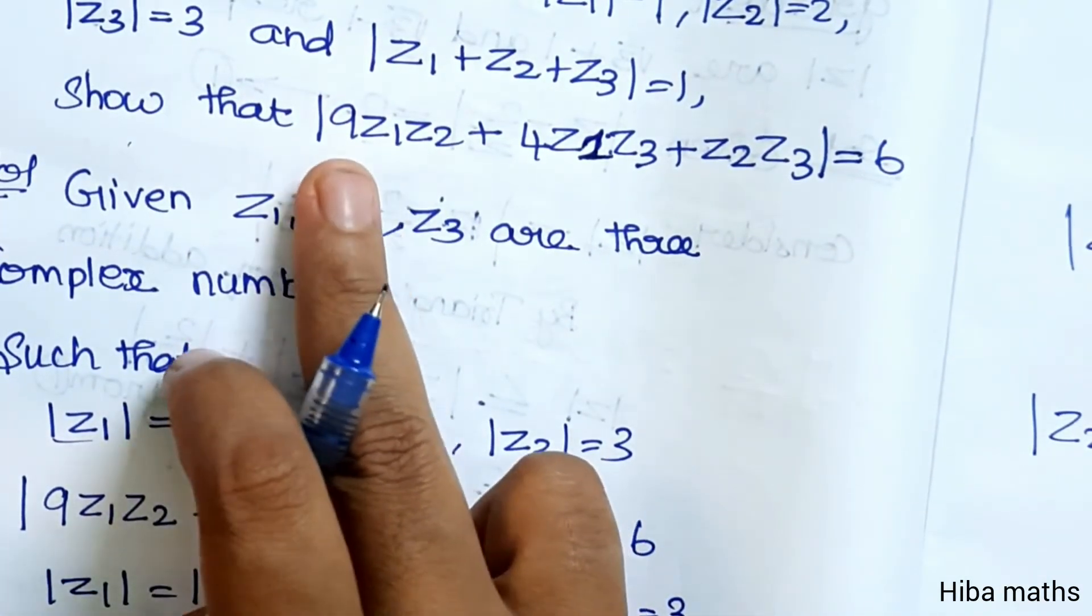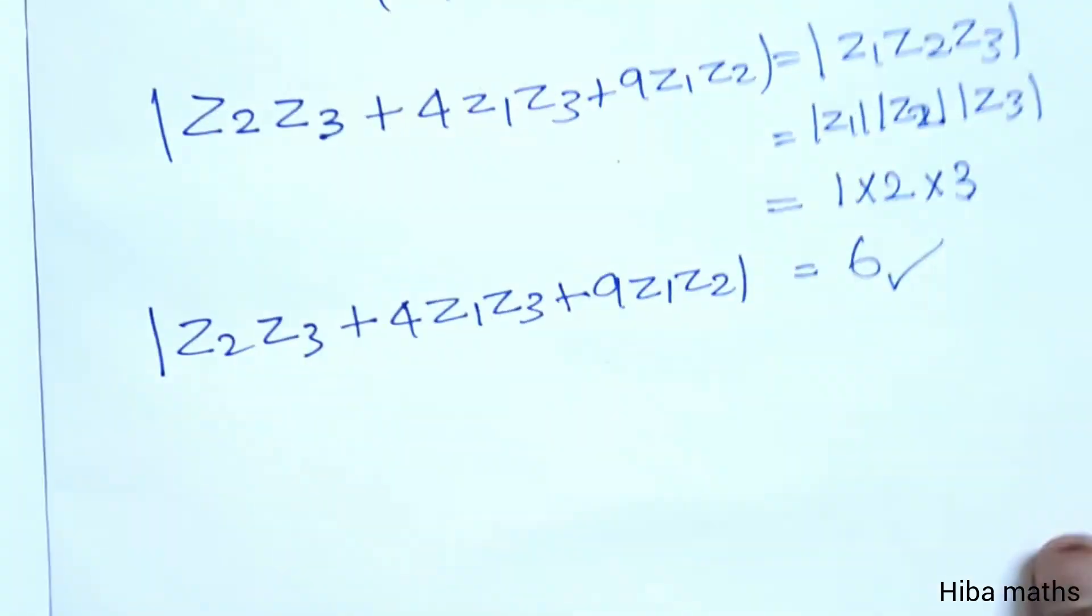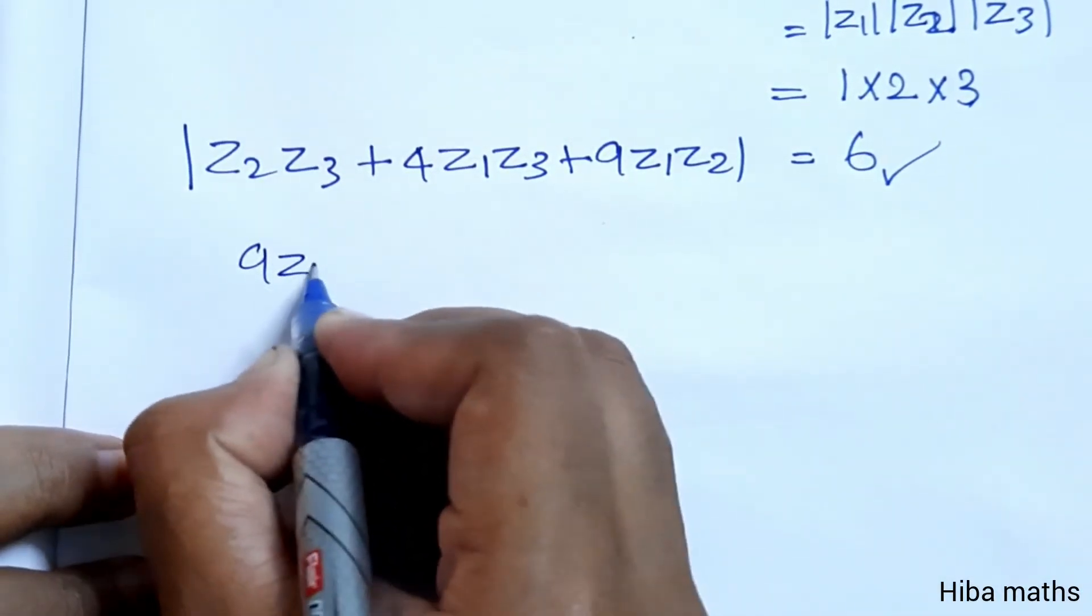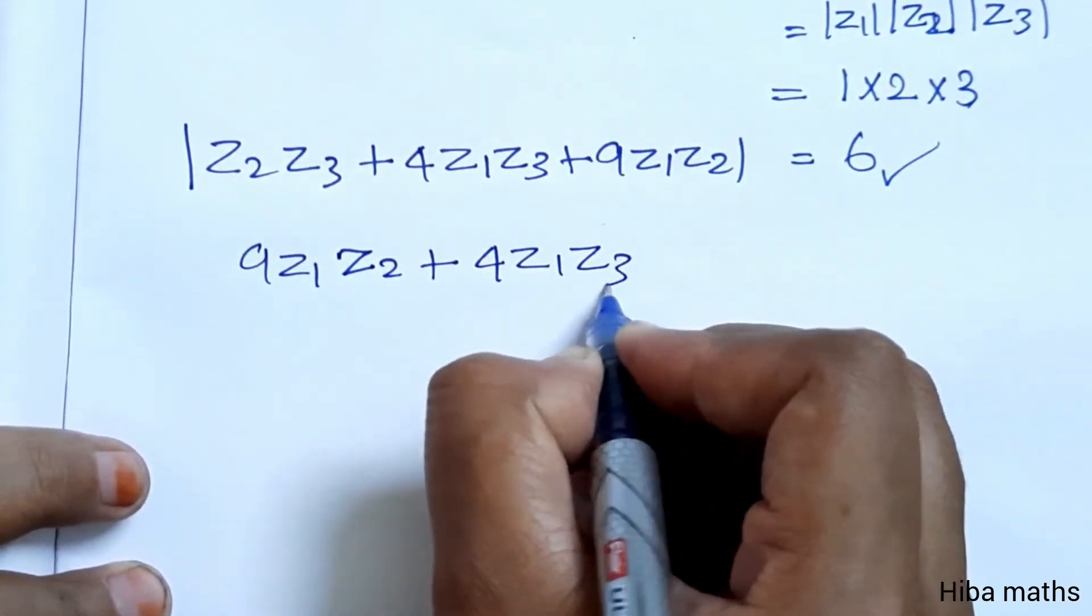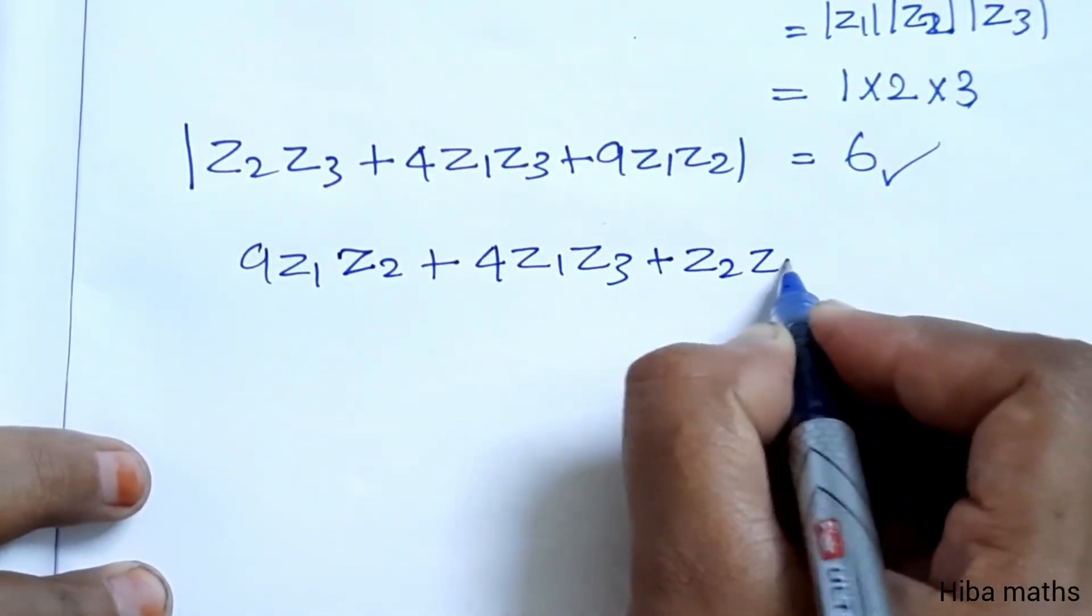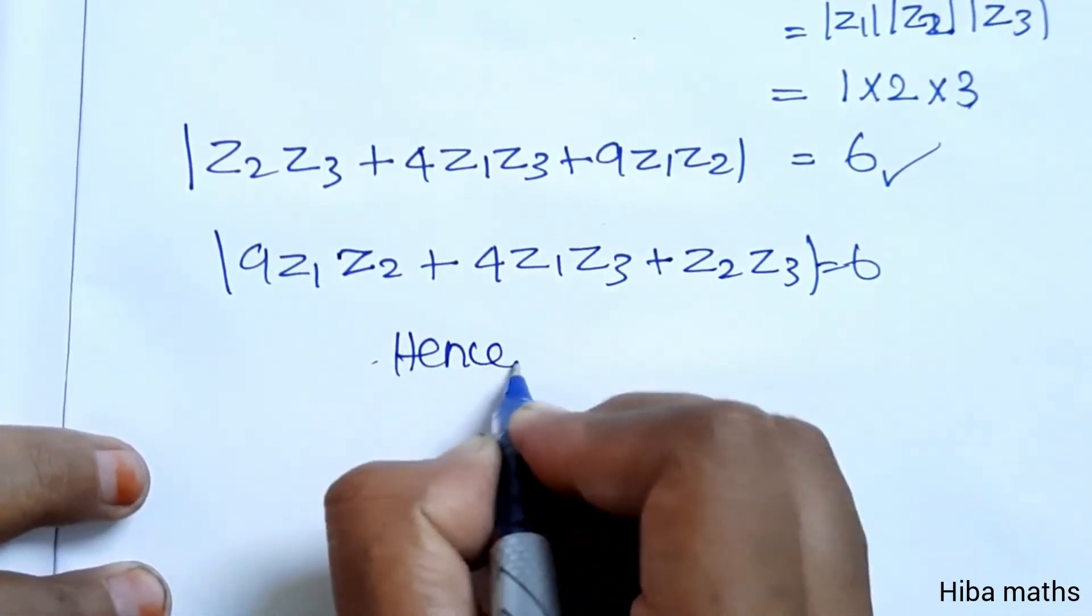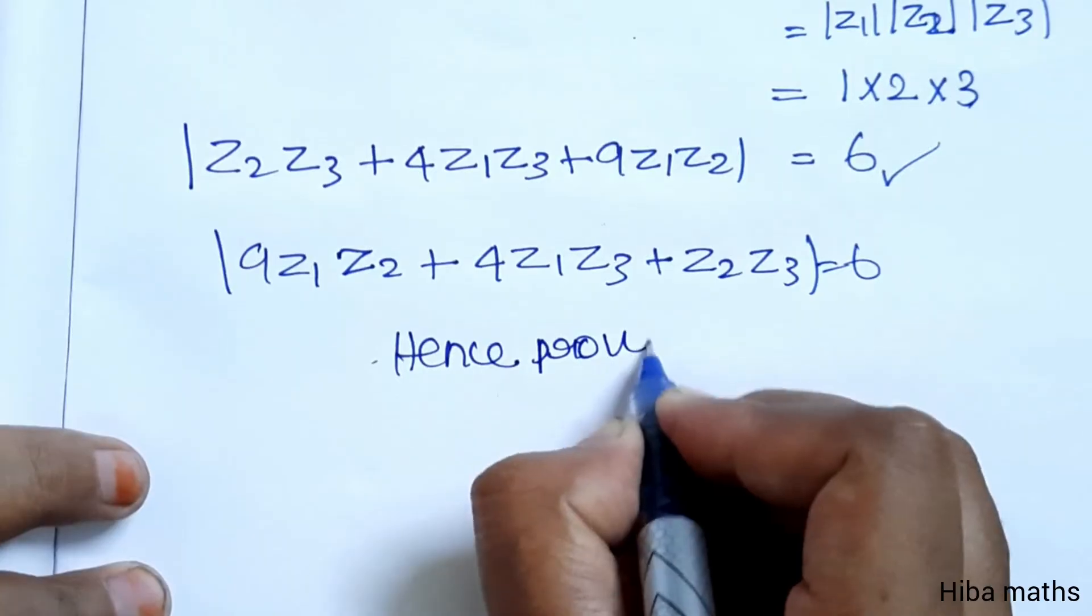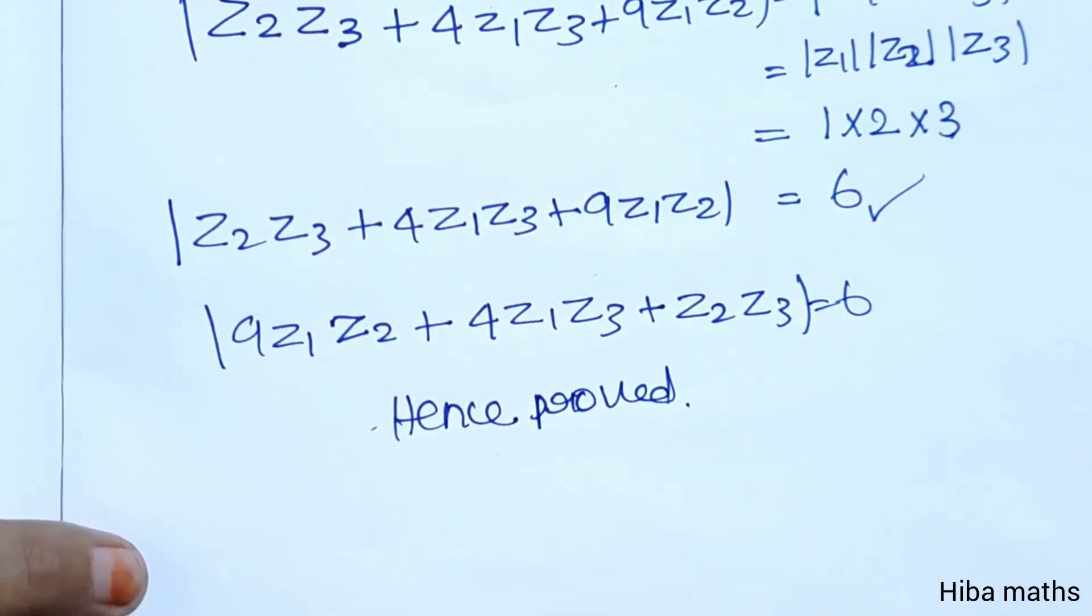First we have the 9 order term, 9Z1Z2, then 4Z1Z3, then Z2Z3. So restating the question: 9Z1Z2 plus 4Z1Z3 plus Z2Z3, that is equal to 6. Hence proved. It's a very easy sum. Let's try it. Thank you so much for watching.